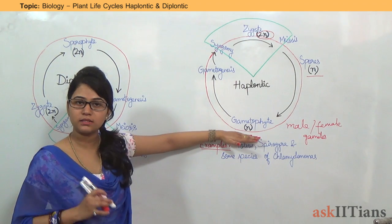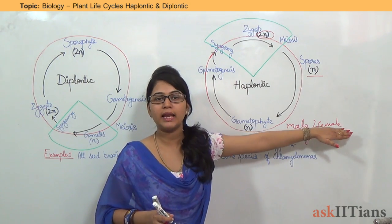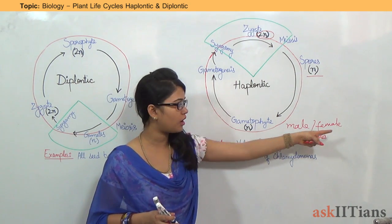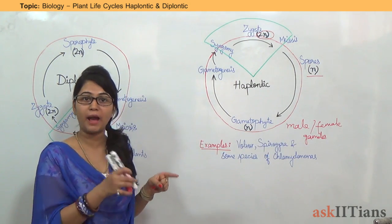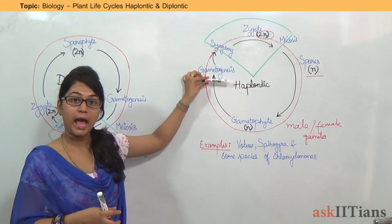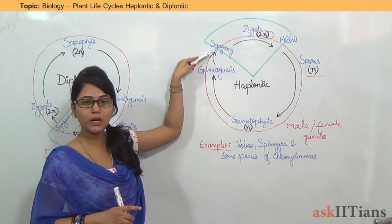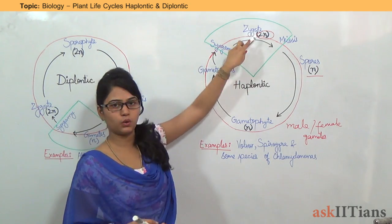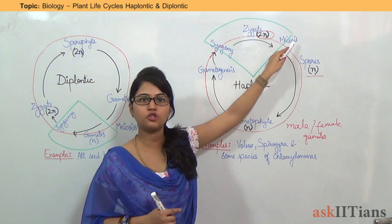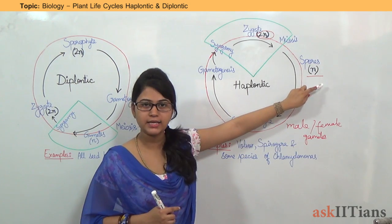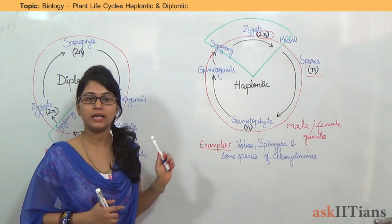Let's revise it once again so that it is clear. First of all, gametophyte is the main plant vegetative body, and it produces male and female gametes. These gametes are formed by the process of gametogenesis. They fuse together through syngamy to produce a zygote, which is diploid. This zygote undergoes meiosis to form haploid spores, and these spores produce the gametophyte. This is all about the haploidic life cycle.